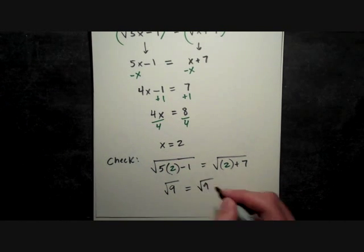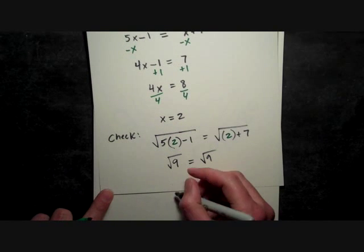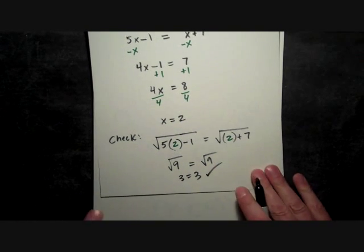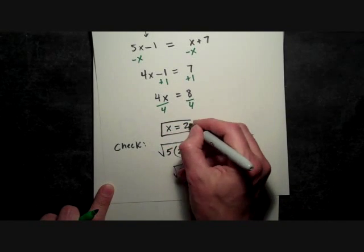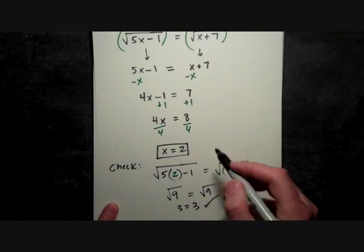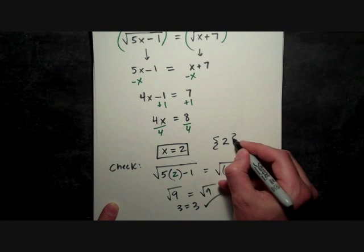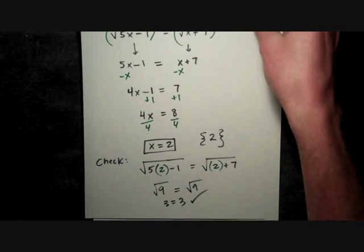2 + 7 is also 9. Those definitely look like they're going to be equal. So 2 works. x = 2 is a solution of the original equation. If you prefer the solution set notation with these set brackets.